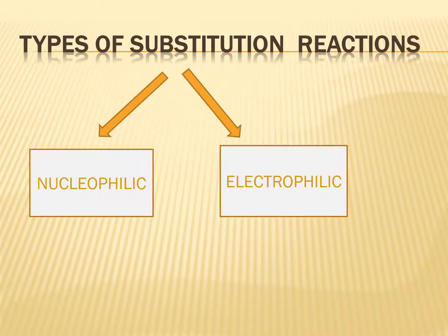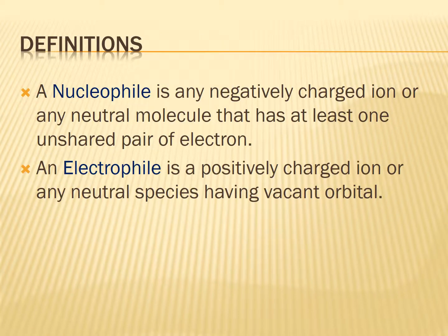Now, what is a nucleophile? A nucleophile is a negatively charged ion or any neutral molecule that has at least one unshared pair of electrons. If it contains any unshared pair of electrons, it must be a negatively charged ion. That is why it is known as a nucleophile.